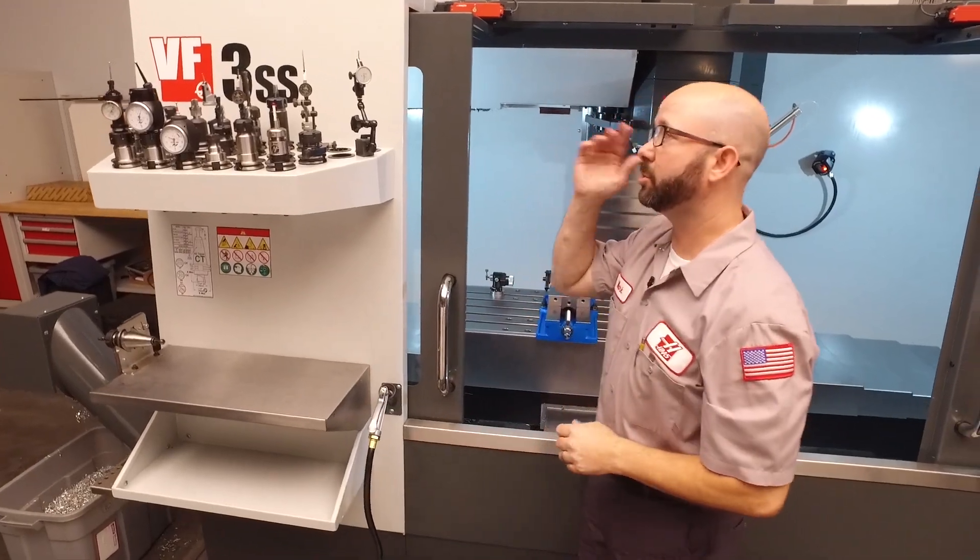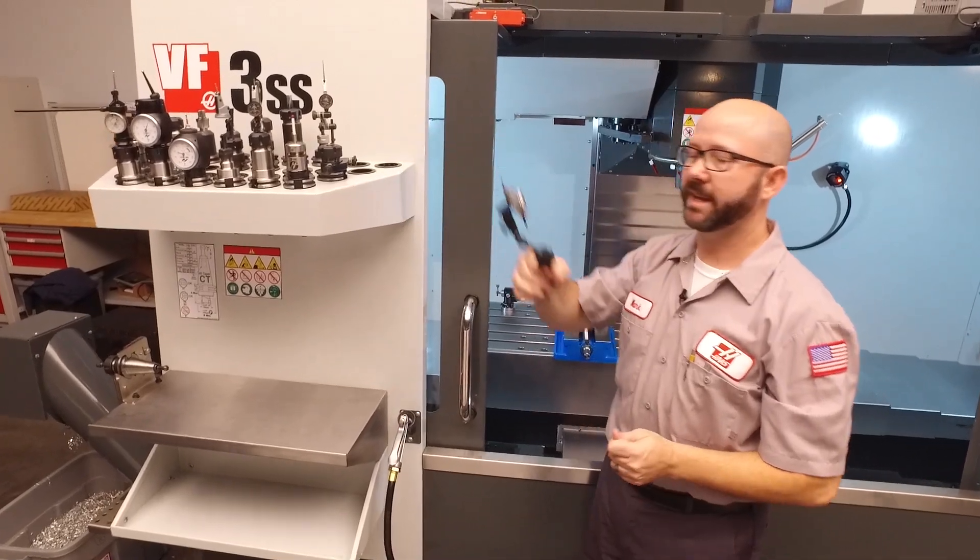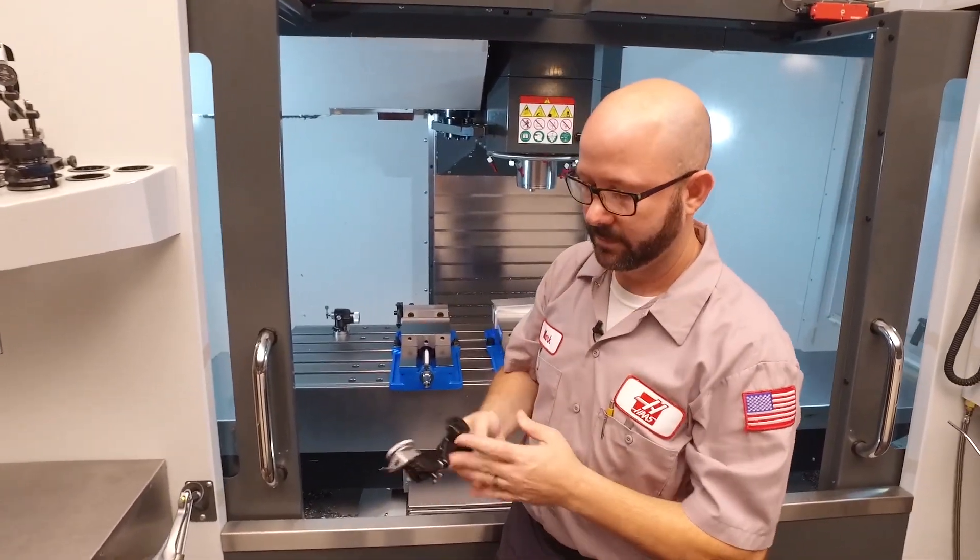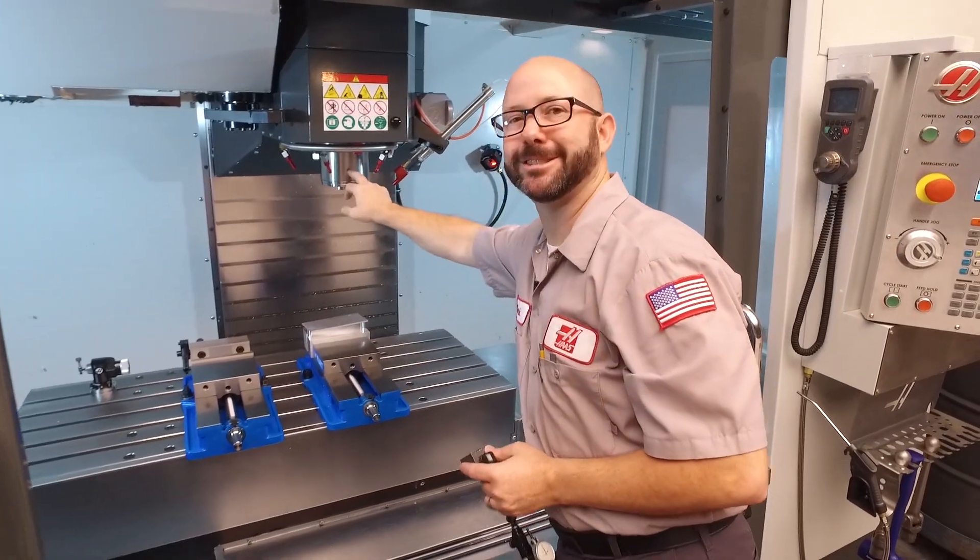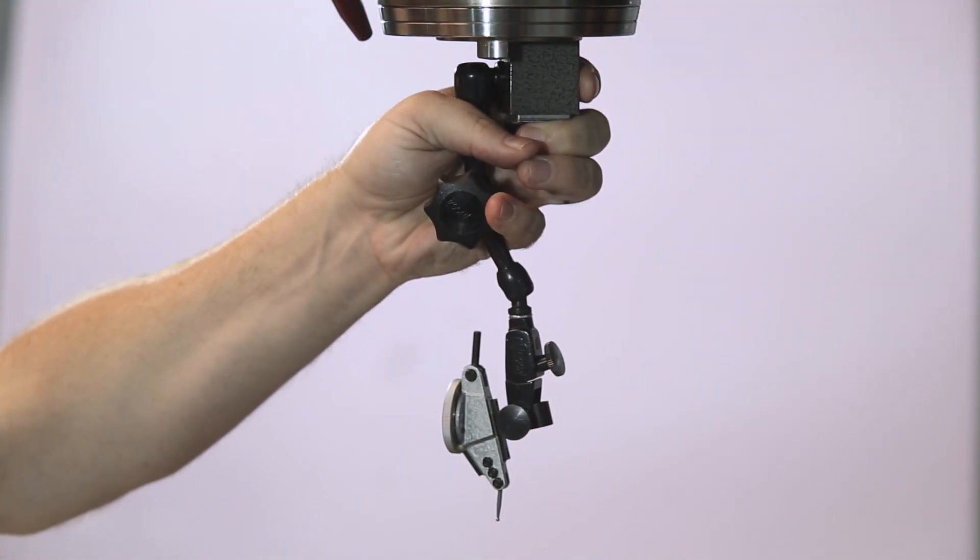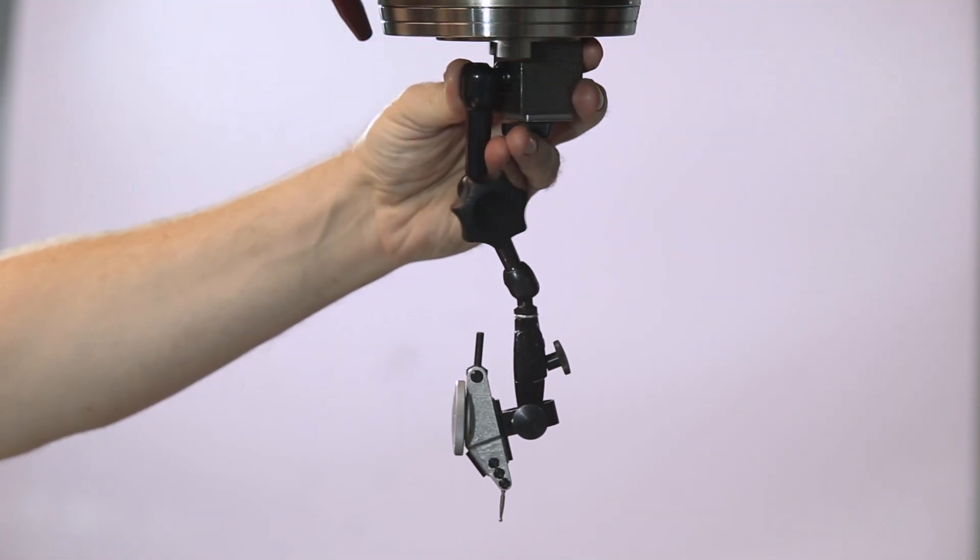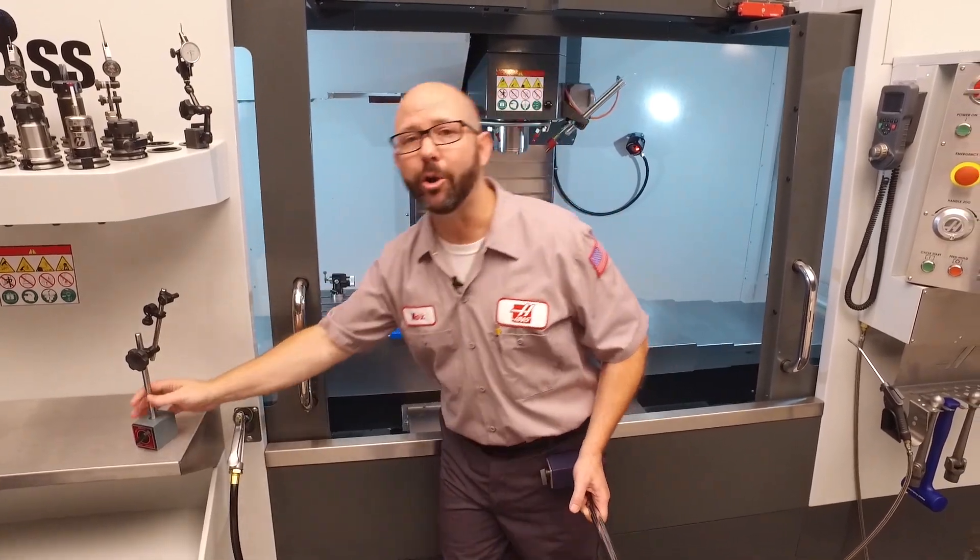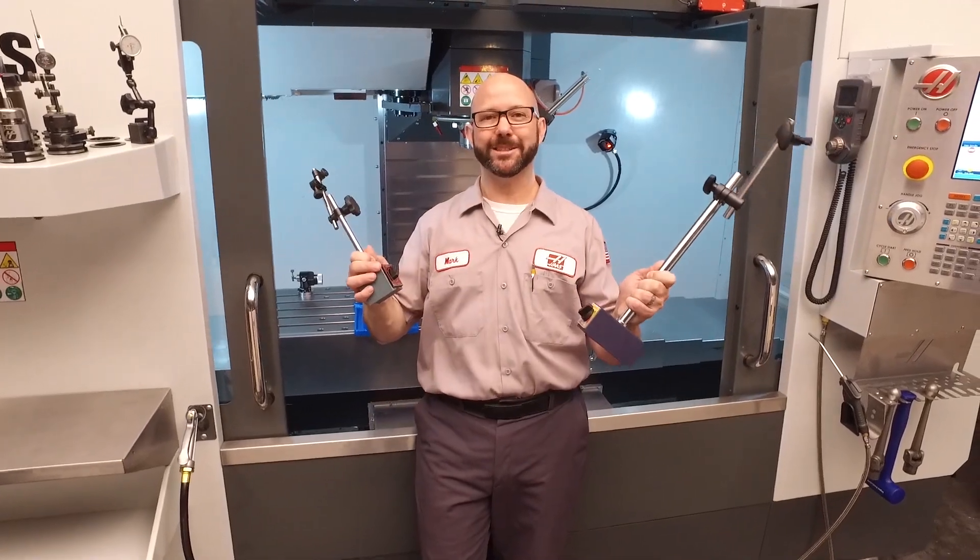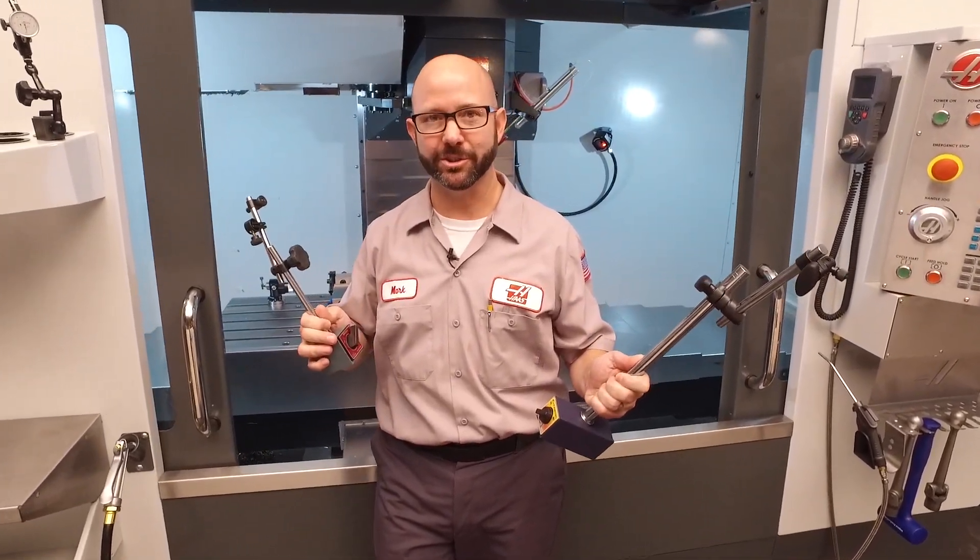Let's go ahead and pull out this indicator and we'll start explaining some of these other indicators that we could have used to do the same thing. A real common tool that we all use is the magnetic base with an indicator. If you're using a mag base, we're not gonna be mounting it to the outside of the spindle. We're gonna put it onto the part of the spindle that actually rotates round and round. The nice thing about this style of mag base is that they come in all different shapes and sizes, depending on what kind of part you need to measure.